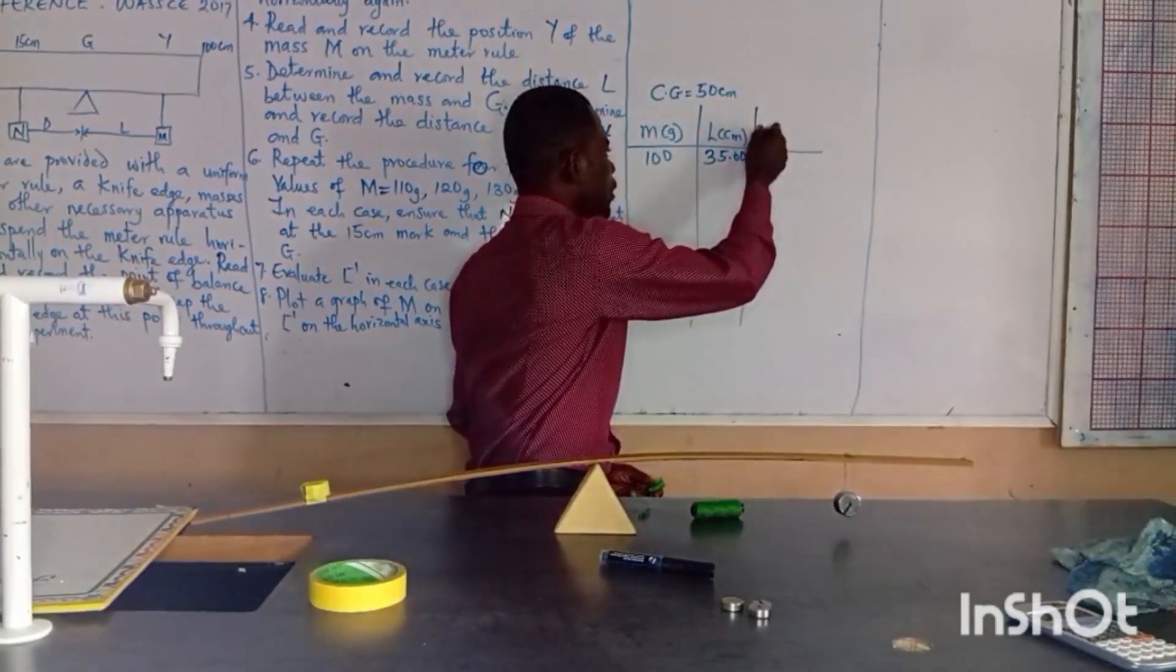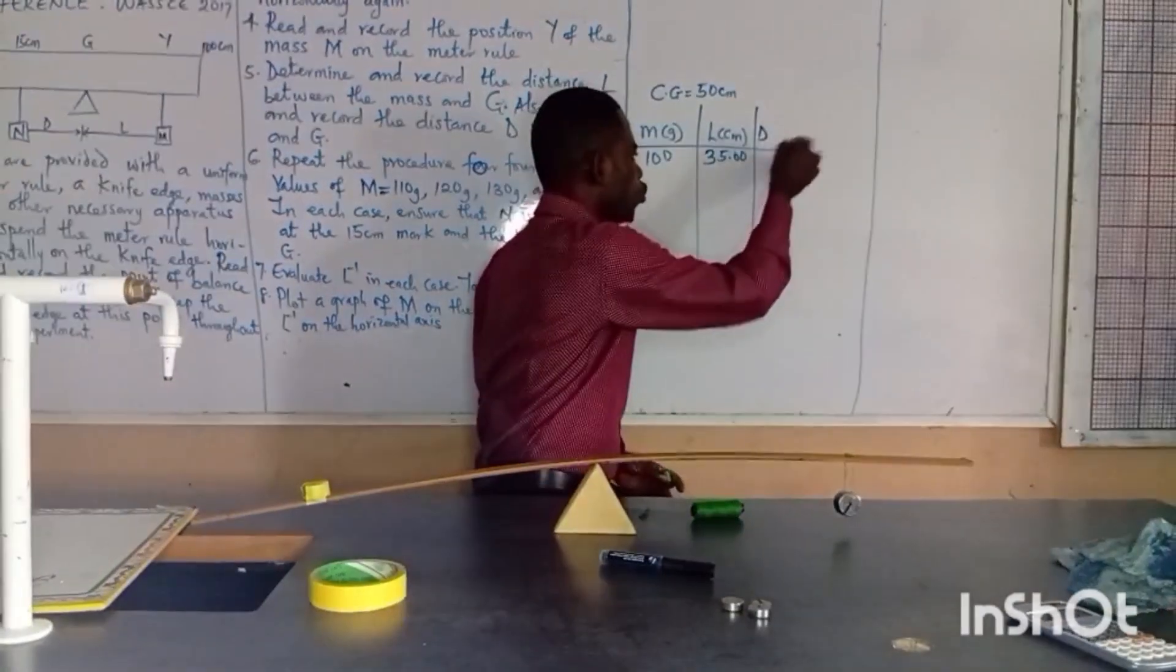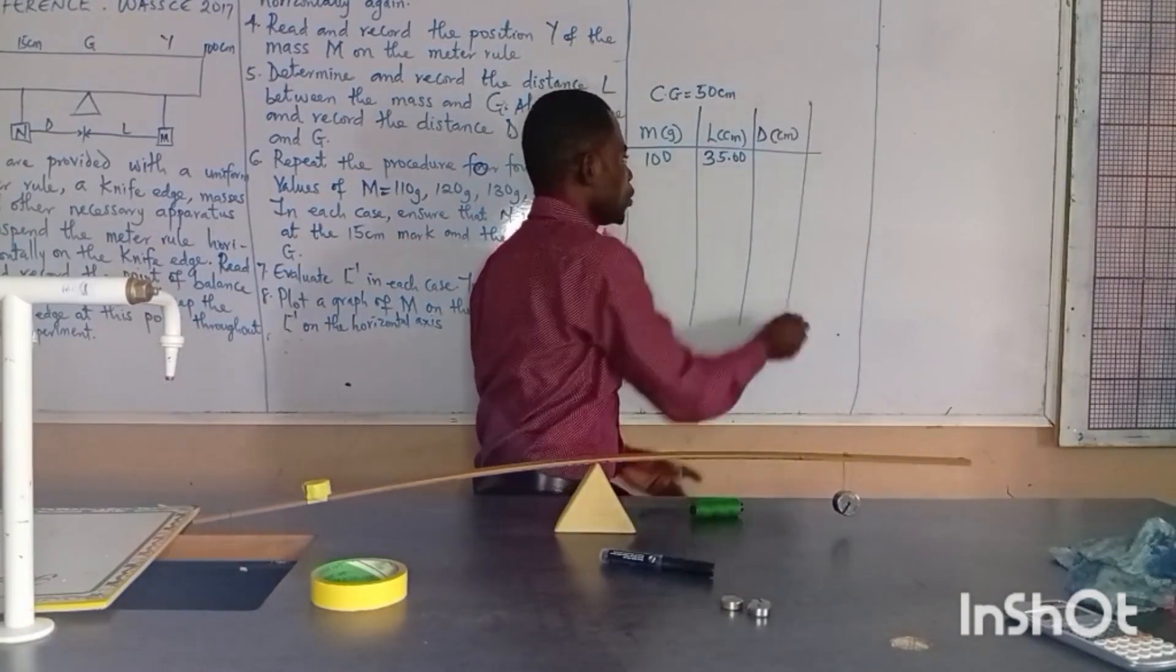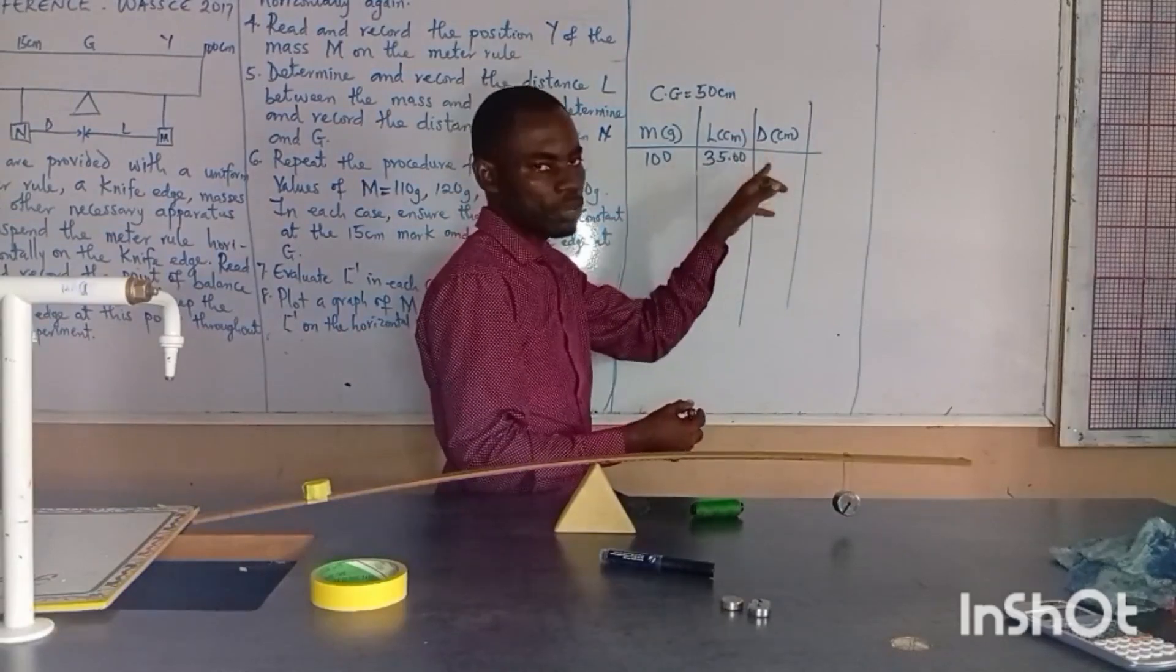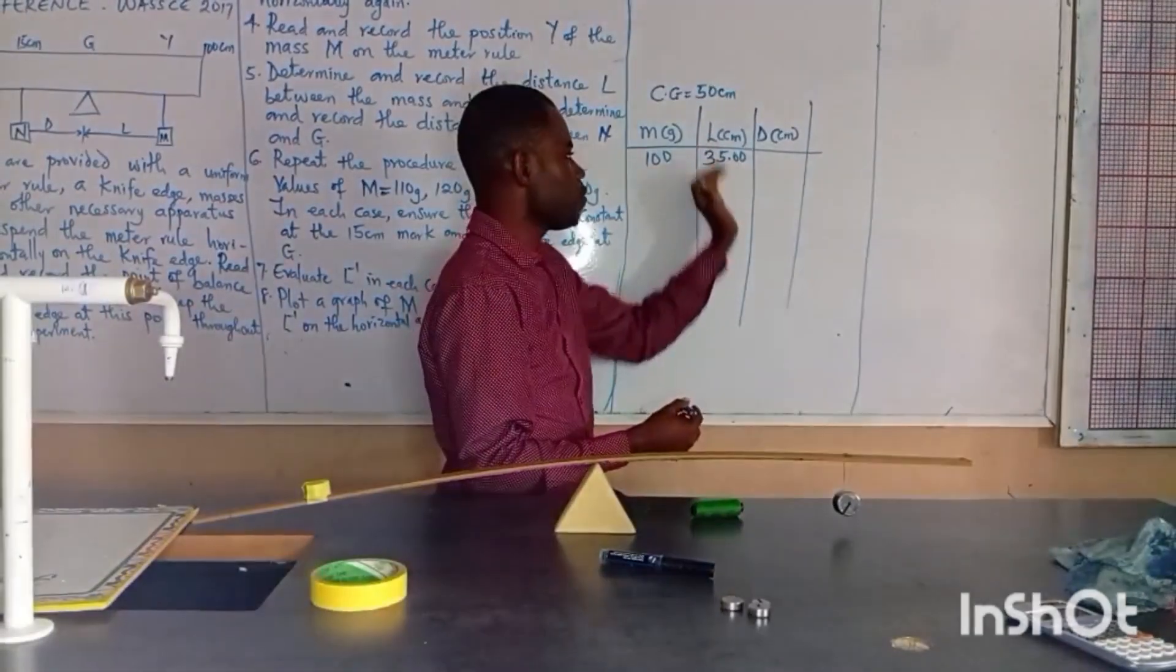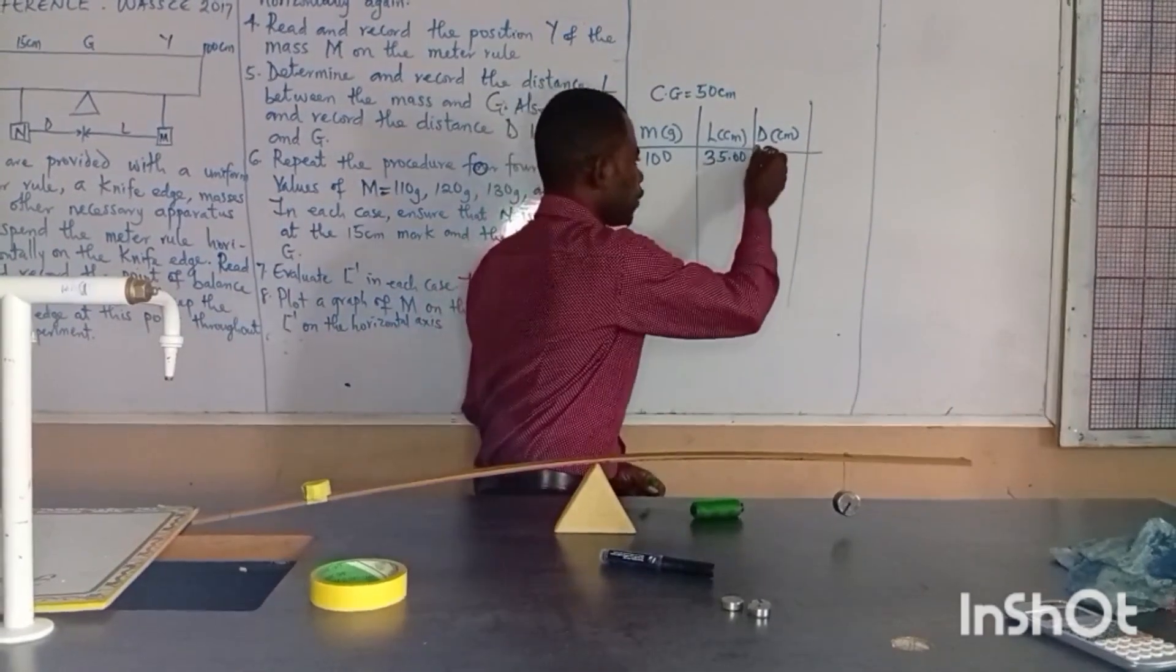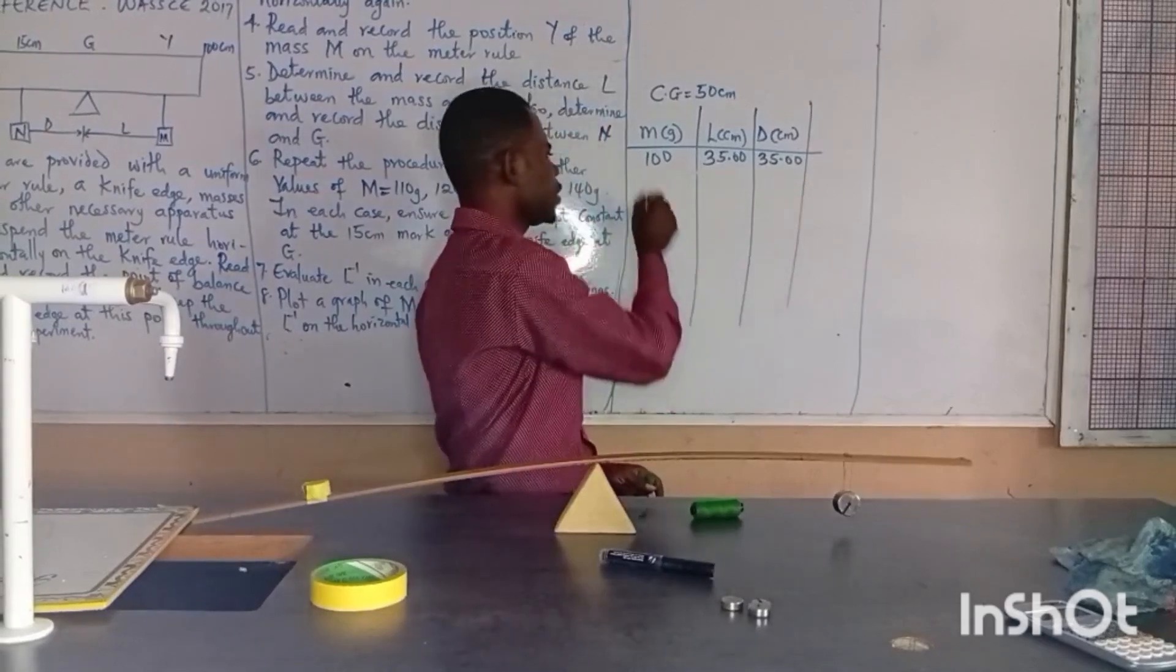So the value for D. Let me also say D in centimeter. D may come first in your column, L comes second. It doesn't matter. But what matters is that make sure your work is neat and you are accurate. So I have 35 as well, 35.0. I think I've achieved that.